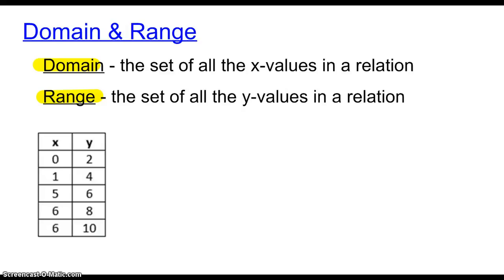The domain talks about all of the x values in a relation, and the range talks about all the y values in a relation. So if there's a question that asks what's the domain and range of this function, set of ordered pairs, or this relation, they're going to be talking about what are the possible x values and what are the possible y values.